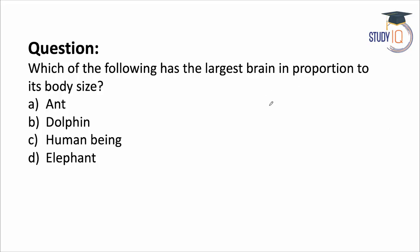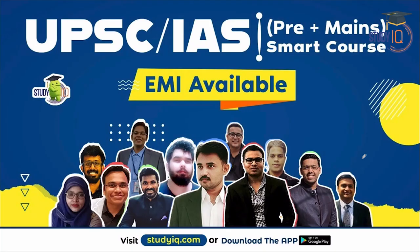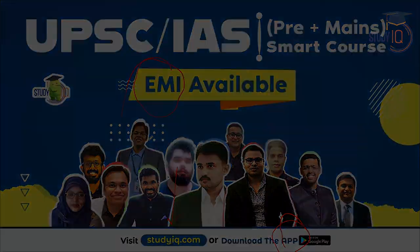Now, a question for you: which of the following has the largest brain in proportion to body size — a dolphin, a human being, or an elephant? You can tell me in the comment section or participate in the poll on Telegram. You can also visit our website, download the application, and check out our courses. Thank you so much.